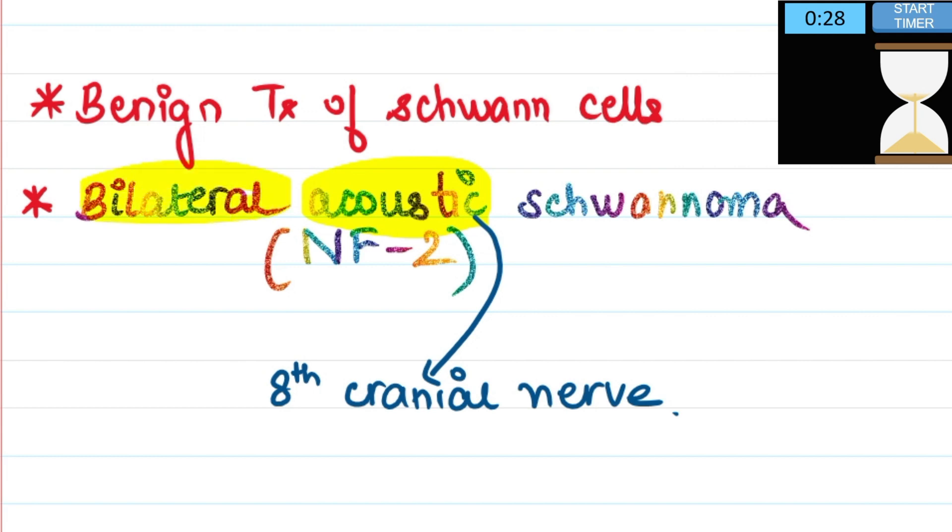So if you are asked which is the chromosome associated with bilaterality of schwannoma? NF2, so 2 times 2, it is chromosome number 22.